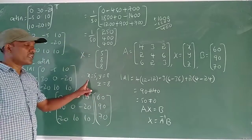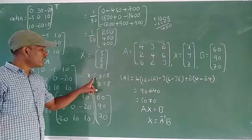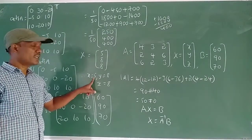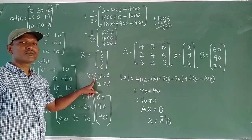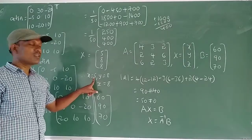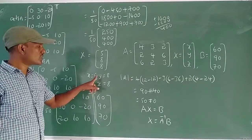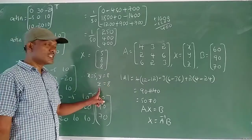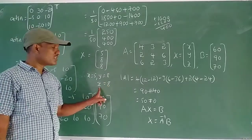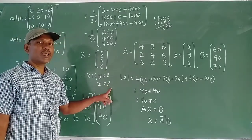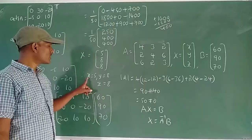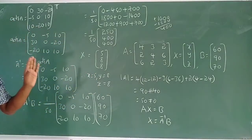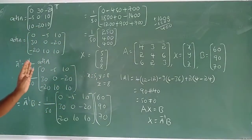The cost of 1 kg onion is 5 rupees. The cost of 1 kg wheat is 8 rupees. The cost of 1 kg rice is 8 rupees.